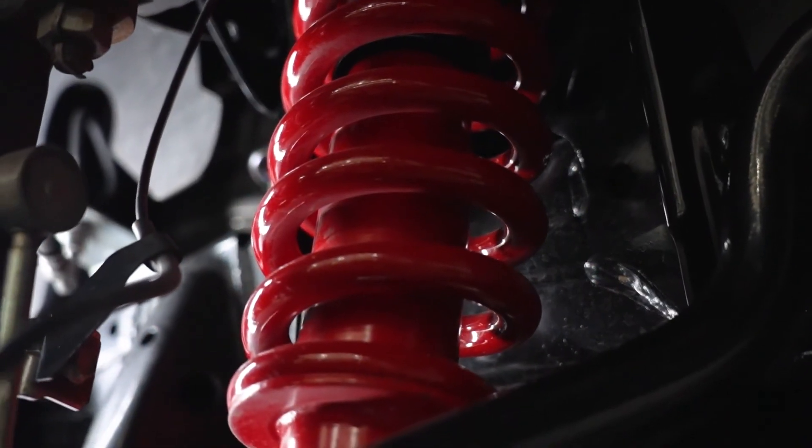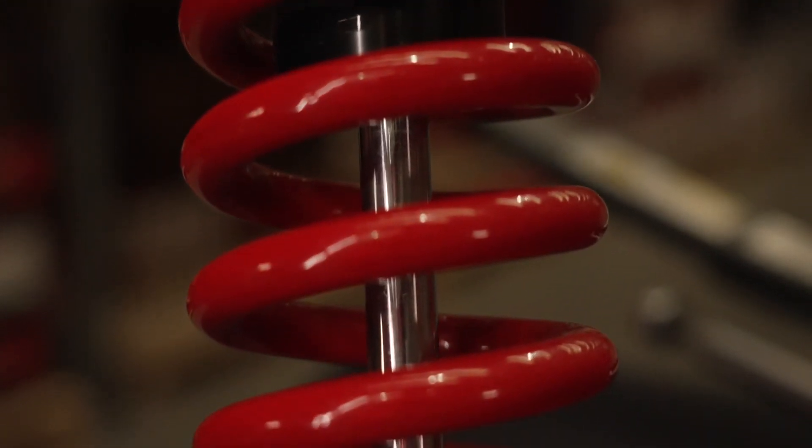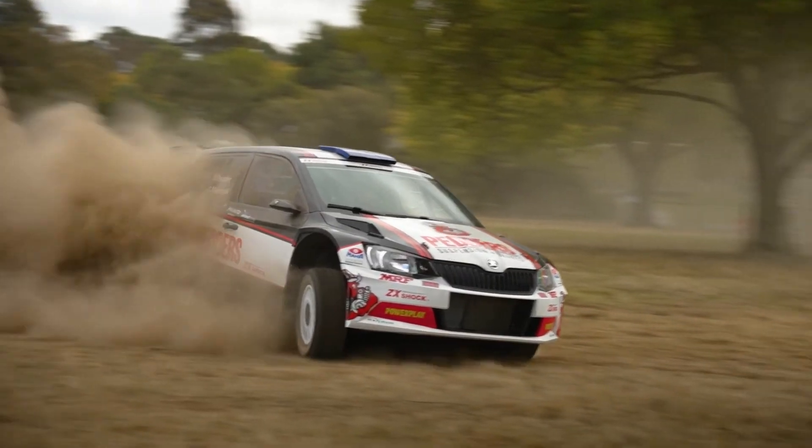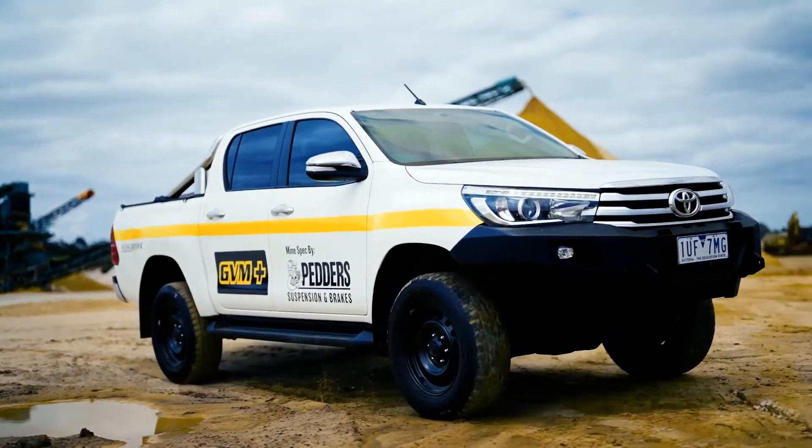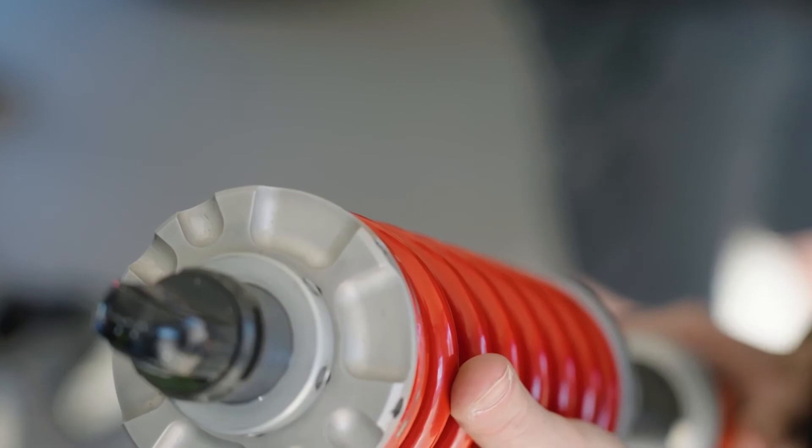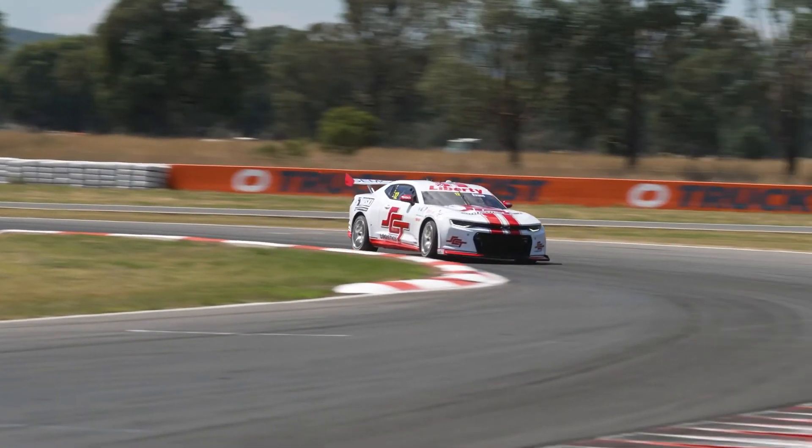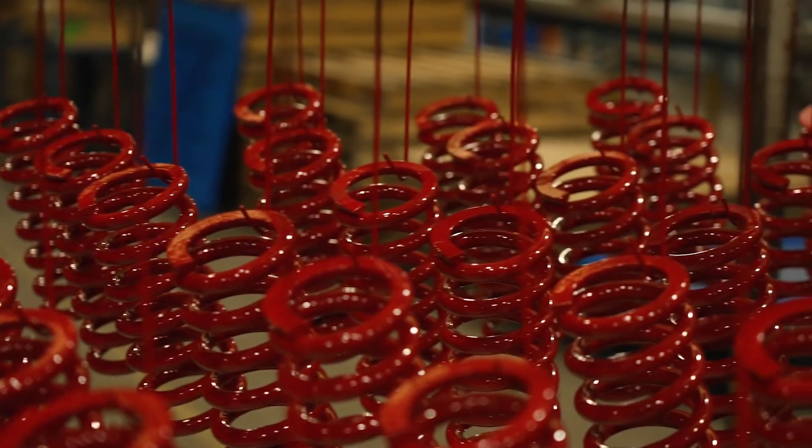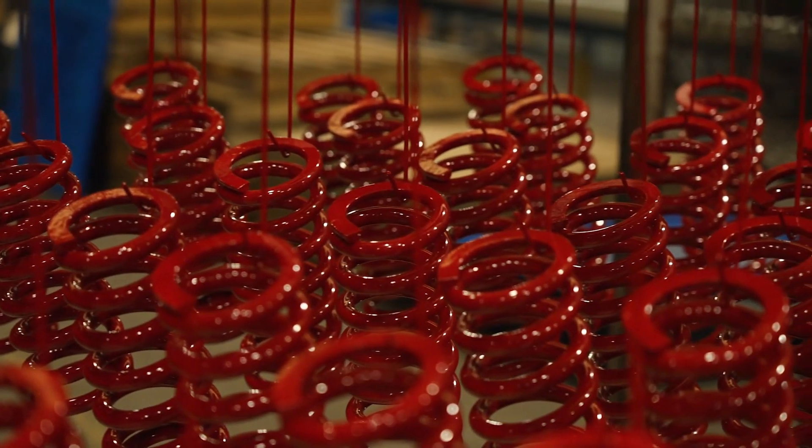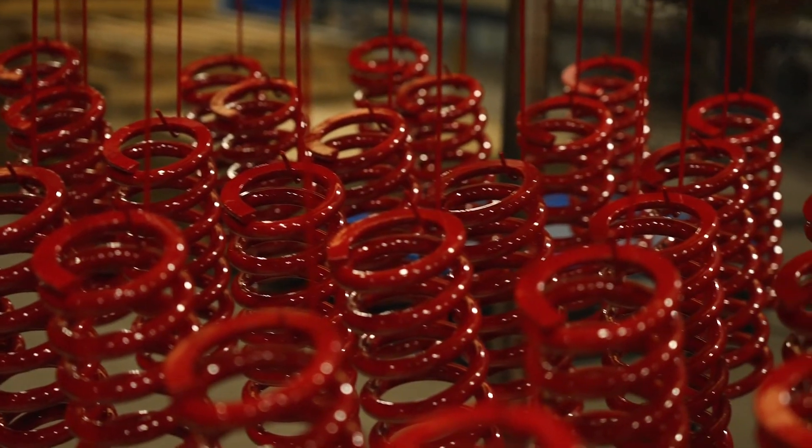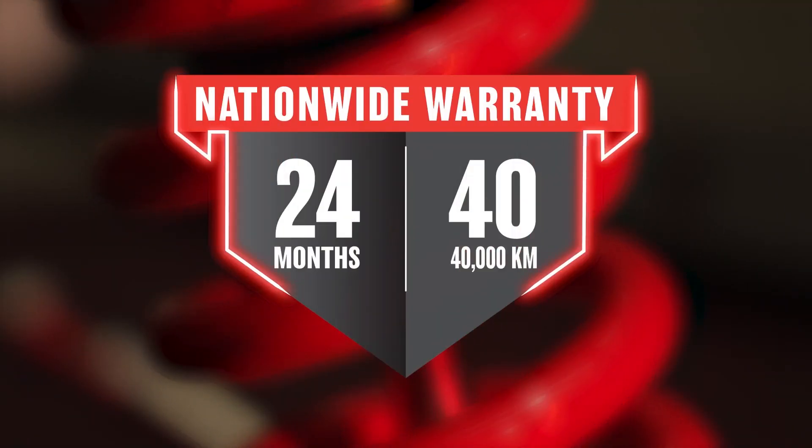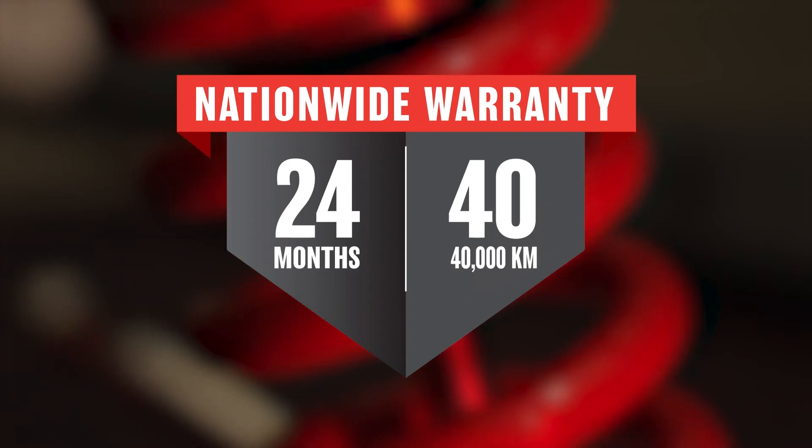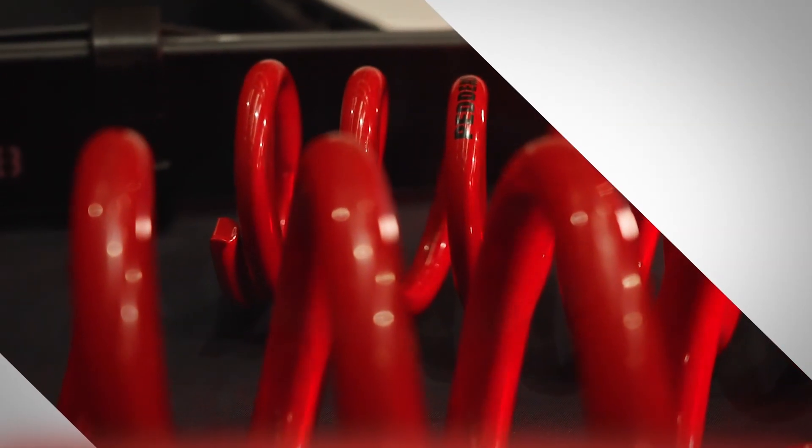This process has been refined to allow Pedder's to manufacture springs for a variety of automotive applications, from sedans to SUVs, commercial vehicles, caravans, even high-end performance springs developed for the extreme conditions of the Supercars championship. With a range of coil springs that now total 1,700 unique part numbers, all covered by Pedder's two-year 40,000 kilometer nationwide warranty. Pedder's Coil Springs, a great Australian manufacturing story.